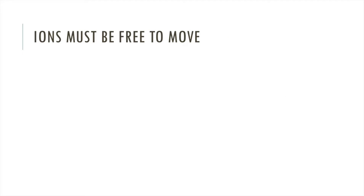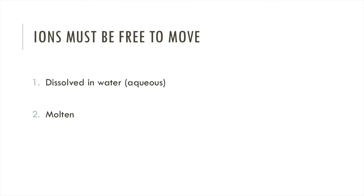In order to have free moving ions you have two options: you can either dissolve your ionic compound in water, as we've seen, or you can melt it down. Let's look at the electrolysis of molten compounds first as it's a slightly simpler scenario.